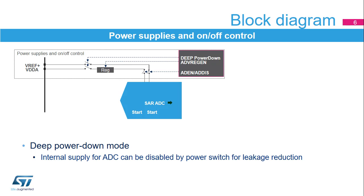To start ADC operations, it is first needed to exit deep power-down mode by setting the deep power-down bit to zero. It is possible to save power by also disabling the ADC voltage regulator, done by writing ADV regen to zero. Setting ADDIS to one disables the ADC. ADEN and ADDIS are then automatically cleared by hardware as soon as the analog ADC is effectively disabled.